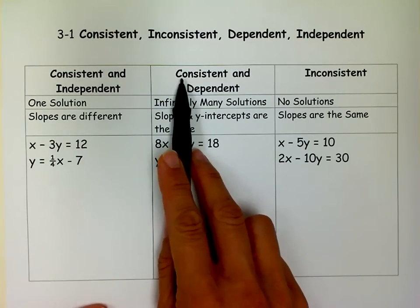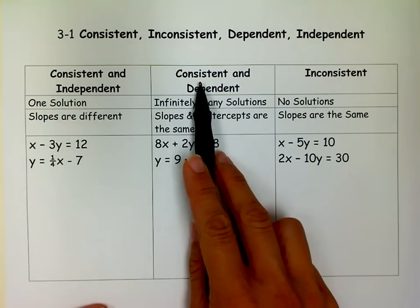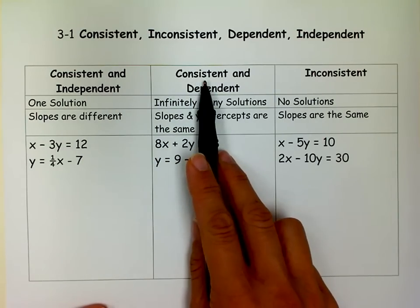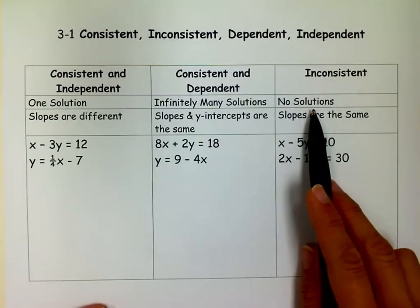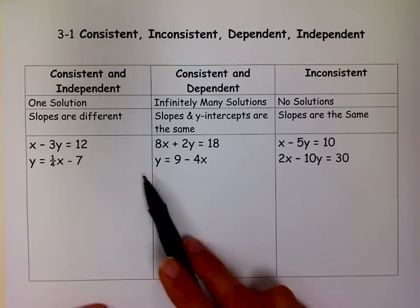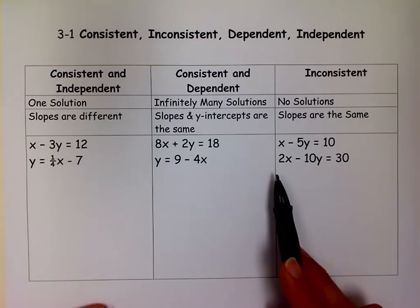Consistent means they have a solution. So this one only has one solution, this one has lots of solutions. So that's what consistent means. Inconsistent means there's no solutions. So we're going to talk about what the equations look like, and also what the graphs look like.